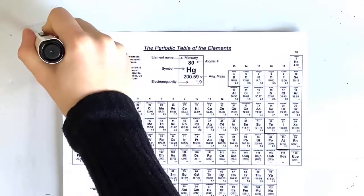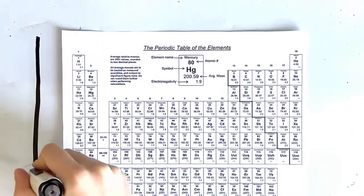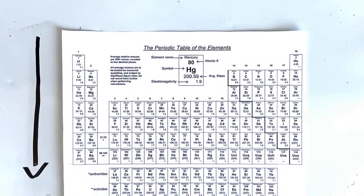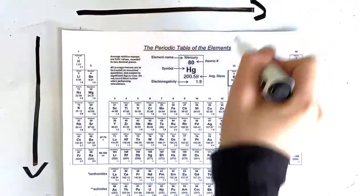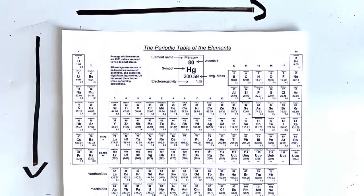As you go down a group, the ENC stays the same. This is because the number of protons increases as well as the number of electron shells and shielding electrons. As you go across a period, the ENC increases by one. This is because the number of protons increases; however, the number of shells and shielding electrons stay the same because the electrons are being added to the same shell.